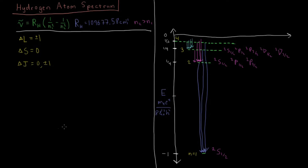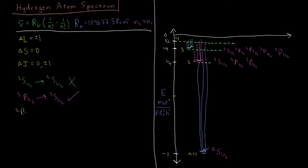Which of these transitions are going to be allowed? Can we have doublet S one-half to doublet S one-half? That would be delta L equals zero, so that is not allowed. Can we have doublet P three-halves going to doublet S one-half, from n equals 2 to n equals 1? That would be fine: delta L equals minus 1, delta S equals zero, and delta J equals minus 1 — all good. Can we have doublet P one-half to doublet S one-half? Again delta L equals minus 1, delta S equals zero, delta J equals zero — that's good, so that transition can occur.